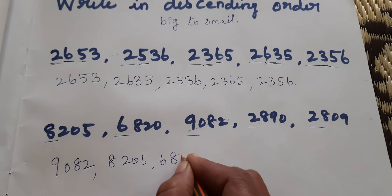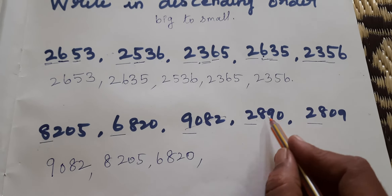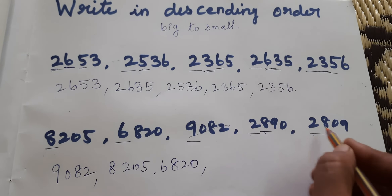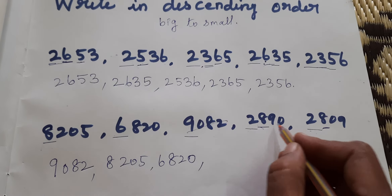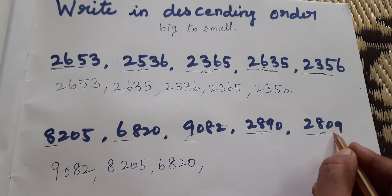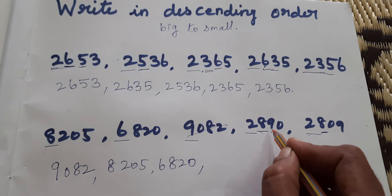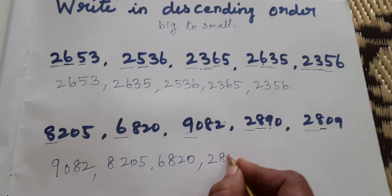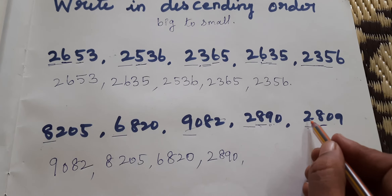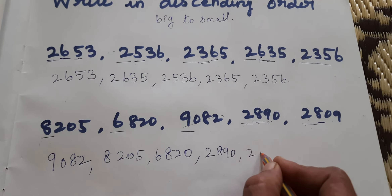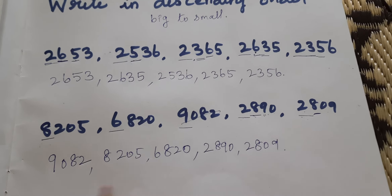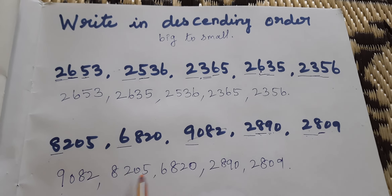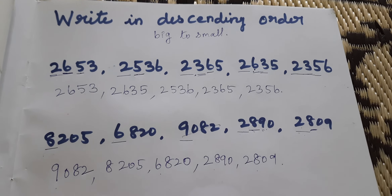Then 2000 and 2000 — both are the same. Hundreds place: 800 and 800 — both are the same. Tens place: 9 or 0? 9 is the biggest number. So 2890 is next, and last is 2809.